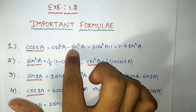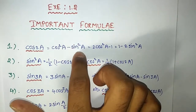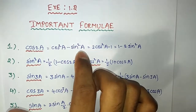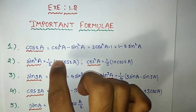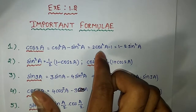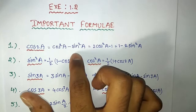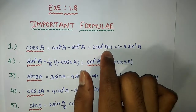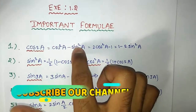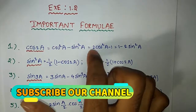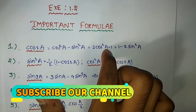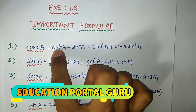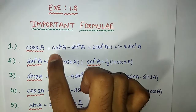cos2a = cos²a minus sin²a is the main formula. We write sin²a equals 1 minus cos²a, so sin²a = 1 minus cos²a. We also write 2cos²a minus 1 for cos2a.